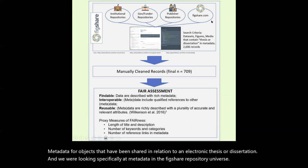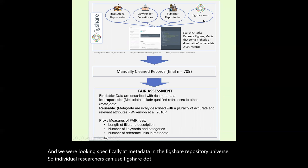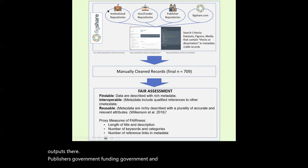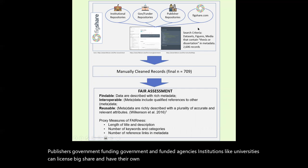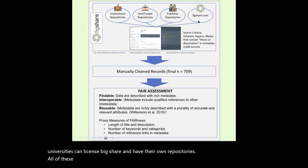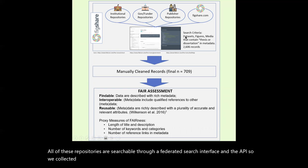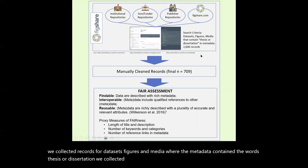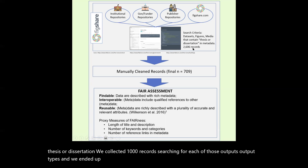Individual researchers can use figshare.com with a free account and share outputs there. Publishers, government and funder agencies, and institutions like universities can license Figshare and have their own repositories. All of these repositories are searchable through a federated search interface and the API. We collected records for datasets, figures, and media where the metadata contained the words 'thesis' or 'dissertation.' We collected 1,000 records searching for each of those output types, and we ended up with 2,606 records.